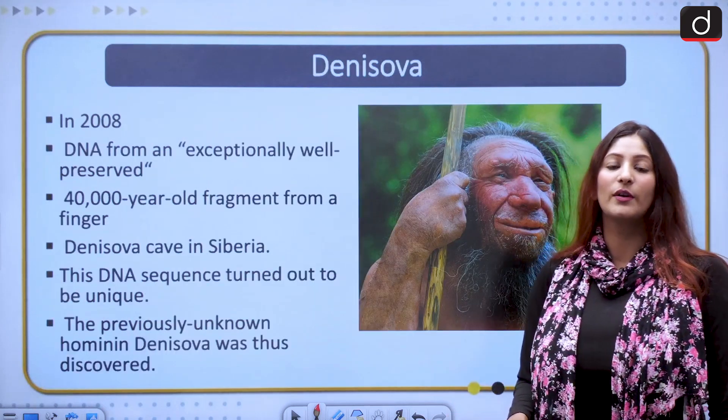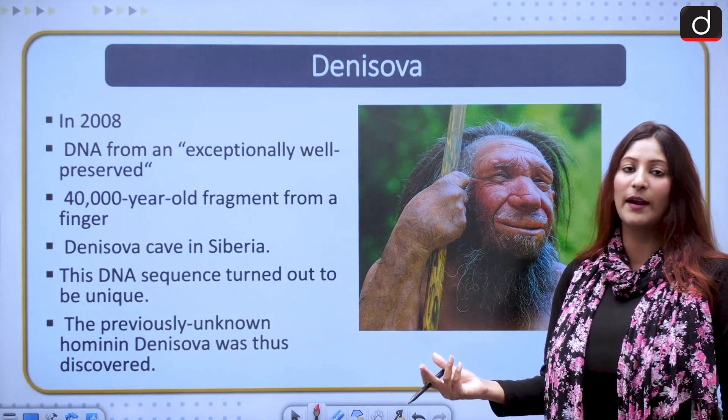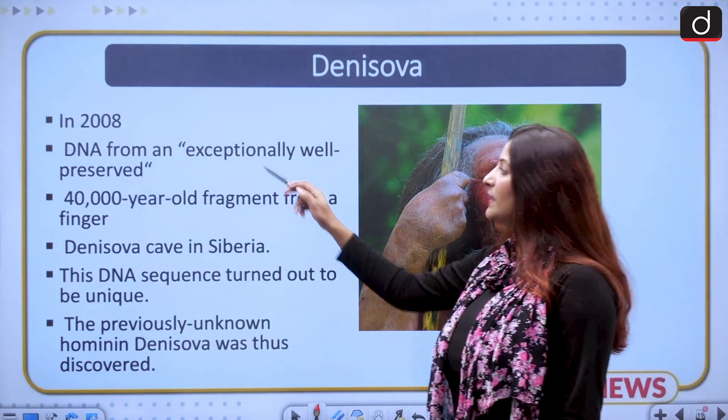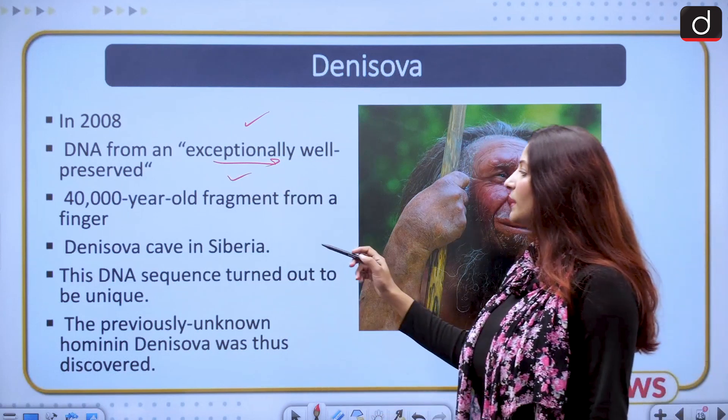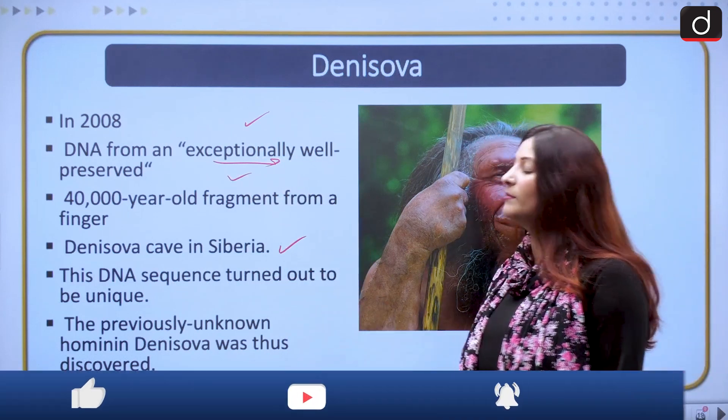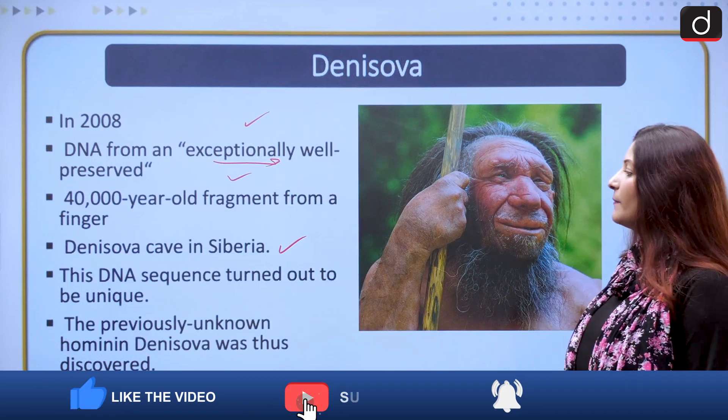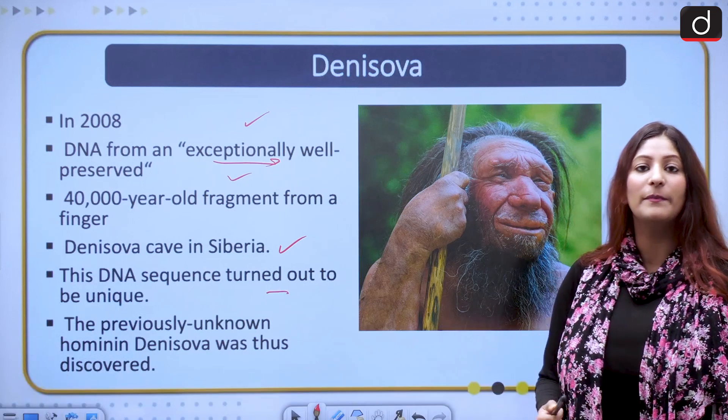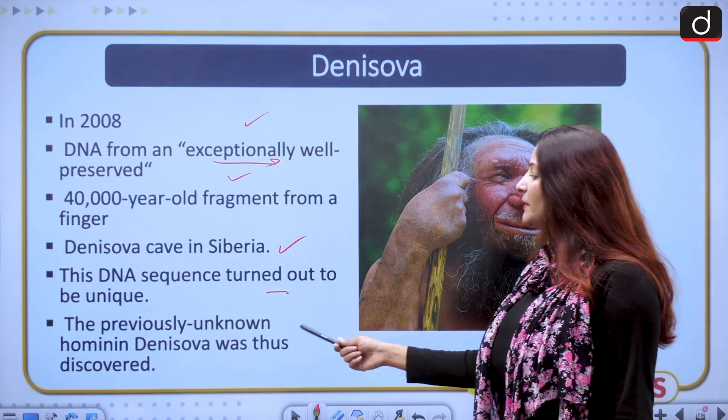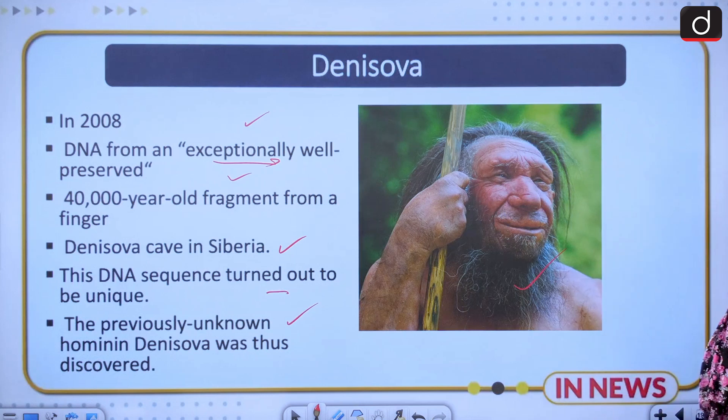Denisova, as I told you, was discovered by Dr. Pääbo. In 2008, DNA from an exceptionally well-preserved 40,000-year-old bone was taken from Denisova cave in Siberia. This DNA sequence turned out to be unique, very different from present-day humans. The previously unknown hominin Denisova came into the picture.